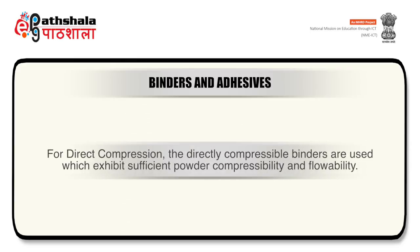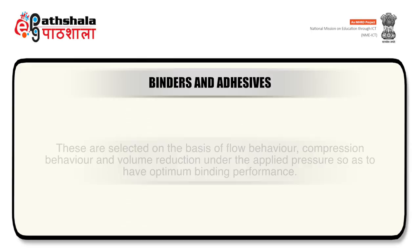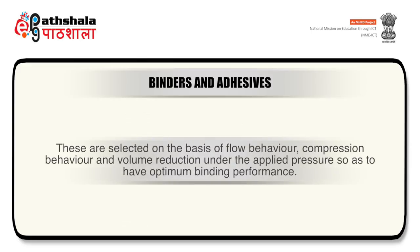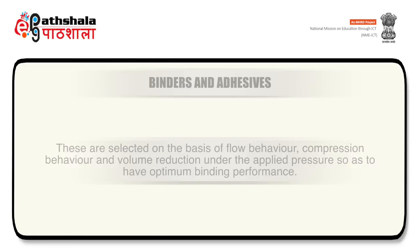For direct compression, directly compressible binders are used which exhibit sufficient powder compressibility and flowability. These are selected on the basis of flow behavior, compression behavior, and volume reduction under applied pressure so as to have optimum binding performance.